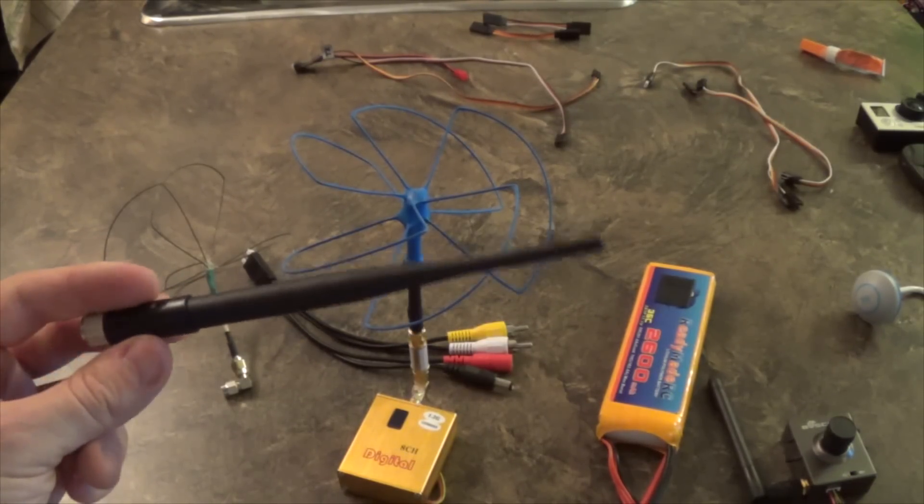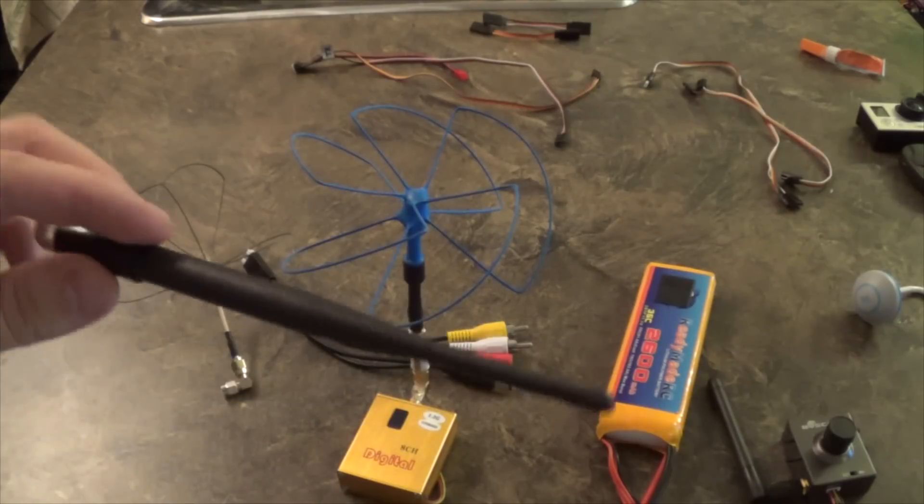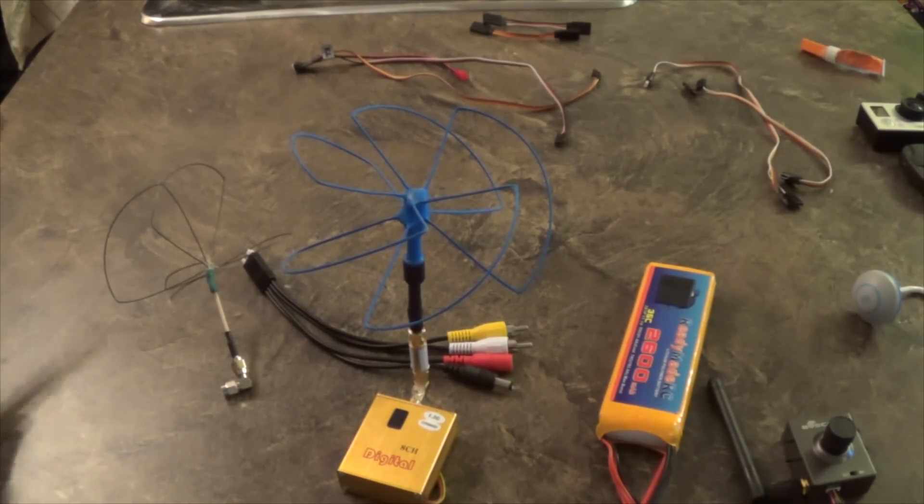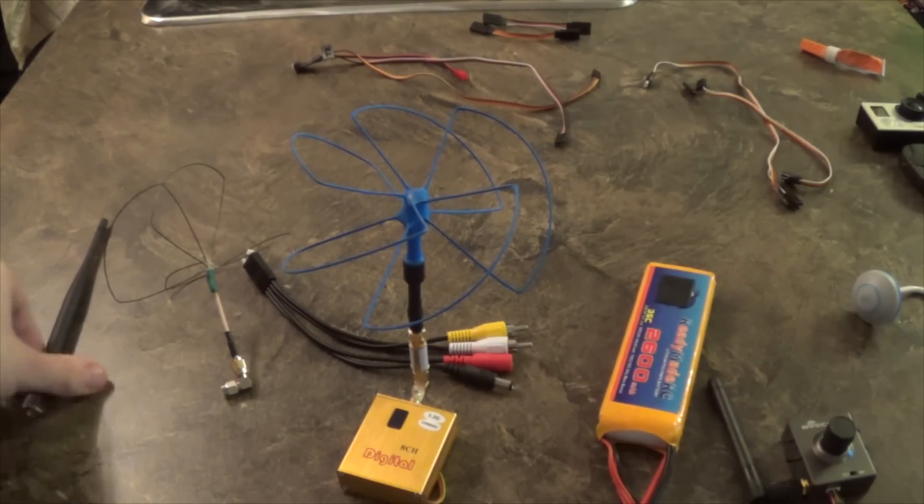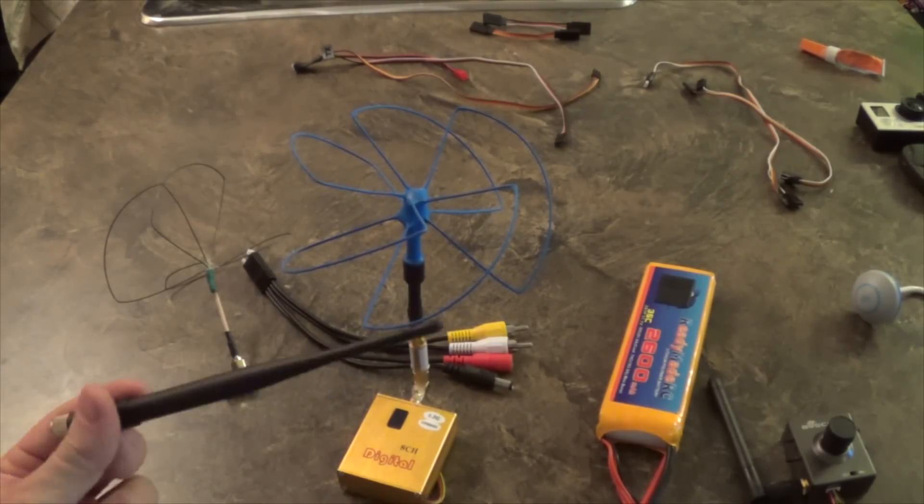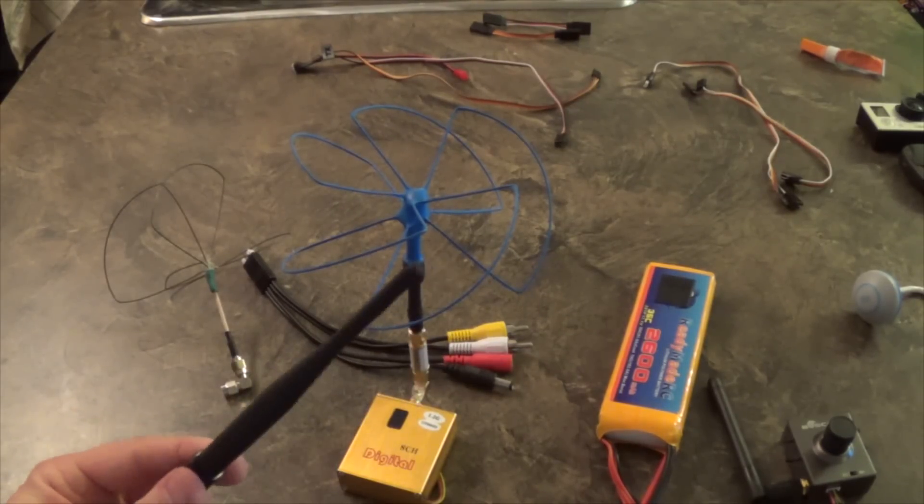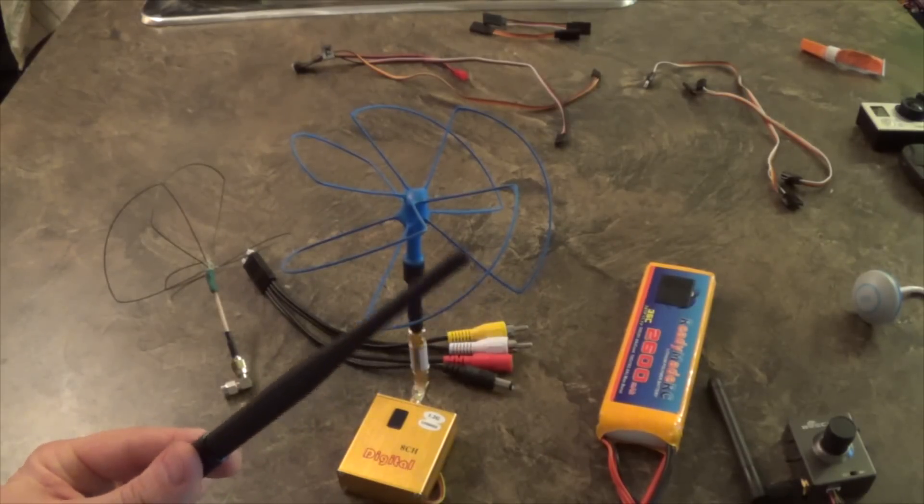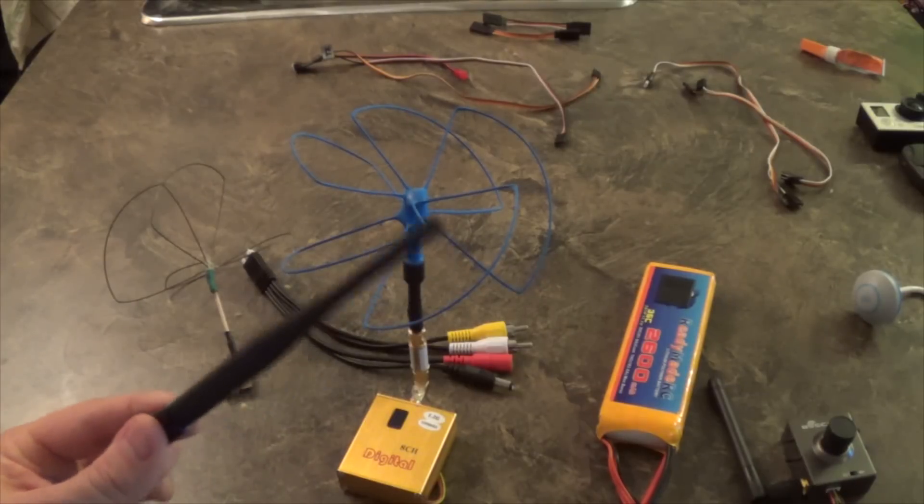Most things come stock with the linear antennas and they'll just look like this little long antenna. I usually run the circular polarized antennas because they deal with interference a little bit better than the linear. Interesting enough is that the linear, if you're flying straight, will actually transmit at a longer distance with no interference.